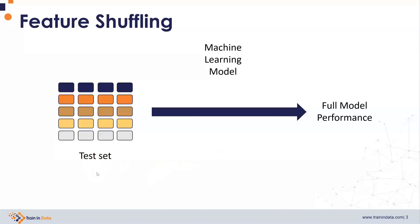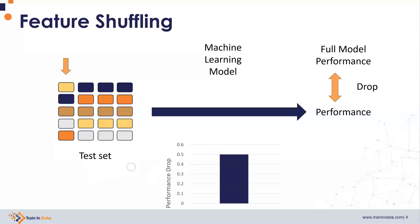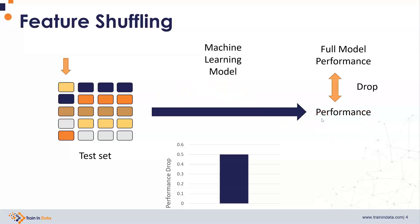Now we start applying permutation feature importance. The first step is to shuffle one of the features — for example this one. Then using the same machine learning model, but now with this test set with one of the features shuffled, we obtain predictions. And with that, we obtain a measure of performance utilizing the same metric as before. If the feature was important, there is going to be a gap or a difference between the model performance on the raw test set and the performance obtained with the shuffled feature. This drop in performance constitutes the permutation importance of this particular feature.